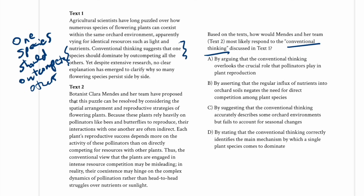Text two: Mendez and her team have proposed that this puzzle can be resolved by considering the spatial arrangement and reproductive strategies of flowering plants. Because these plants rely heavily on pollinators like bees and butterflies to reproduce, their interactions are often indirect — each plant's reproductive success depends more on the activity of pollinators than on directly competing for resources. Thus the conventional view that the plants are engaged in intense resource competition may be misleading; their coexistence may hinge on the complex dynamics of pollination rather than head-to-head struggles over nutrients or sunlight.